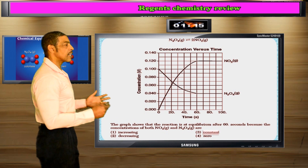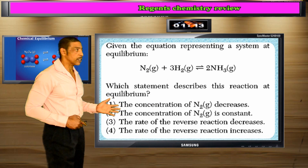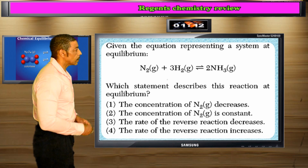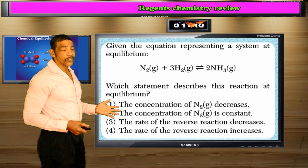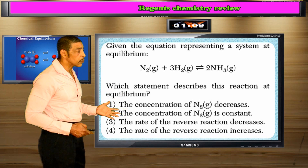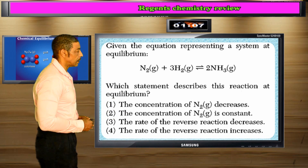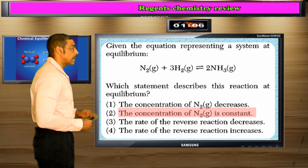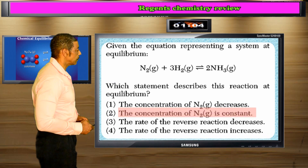Which statement describes this reaction at equilibrium? At equilibrium the concentrations are constant and the rates are equal. So the correct answer to this question is that the concentration of N2 is constant.